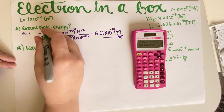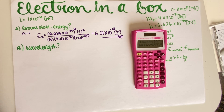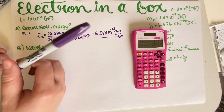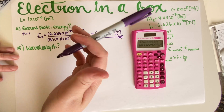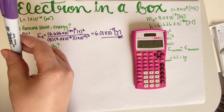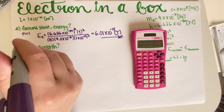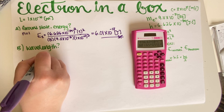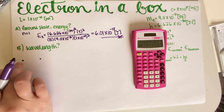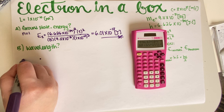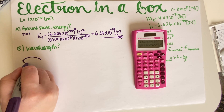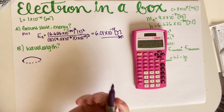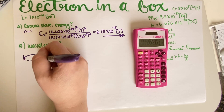Now for part B, they're asking for the wavelength. There are two different ways to do this. The easiest way is to remember that when an electron or particle is in a box — confined — it acts as a fixed-fixed standing wave.